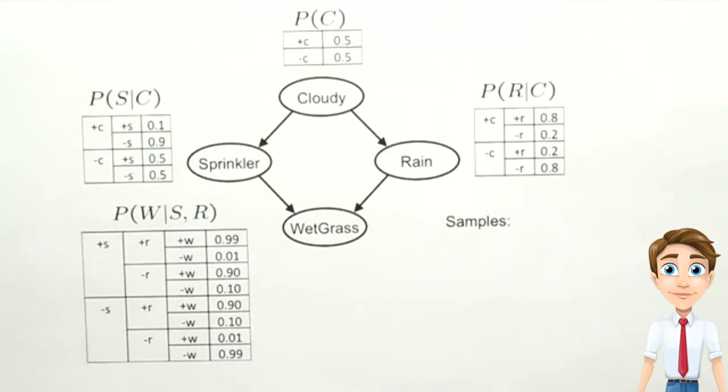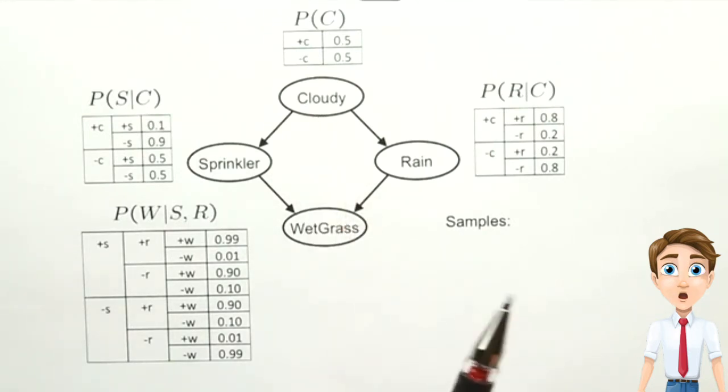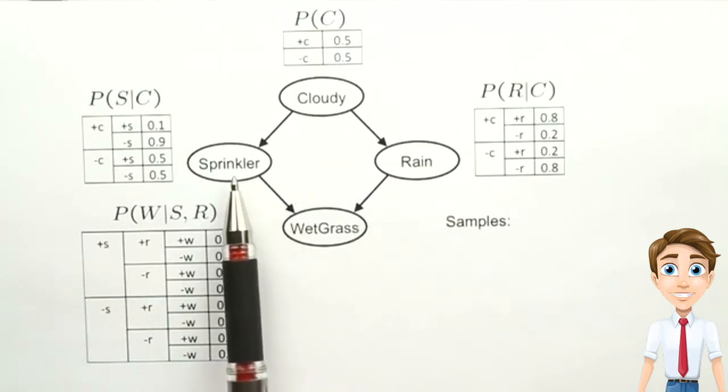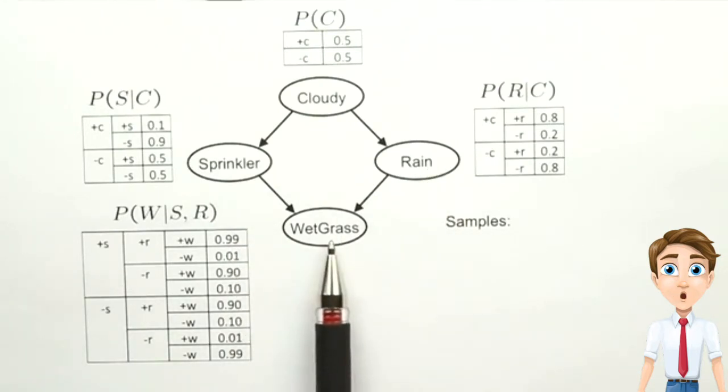Here's a new network that we'll use to investigate how sampling can be used to do inference. In this network, we have four variables; they're all Boolean. Cloudy tells us if it's cloudy or not outside, and that can have an effect on whether the sprinklers are turned on and whether it's raining. And those two variables, in turn, have an effect on whether the grass gets wet.